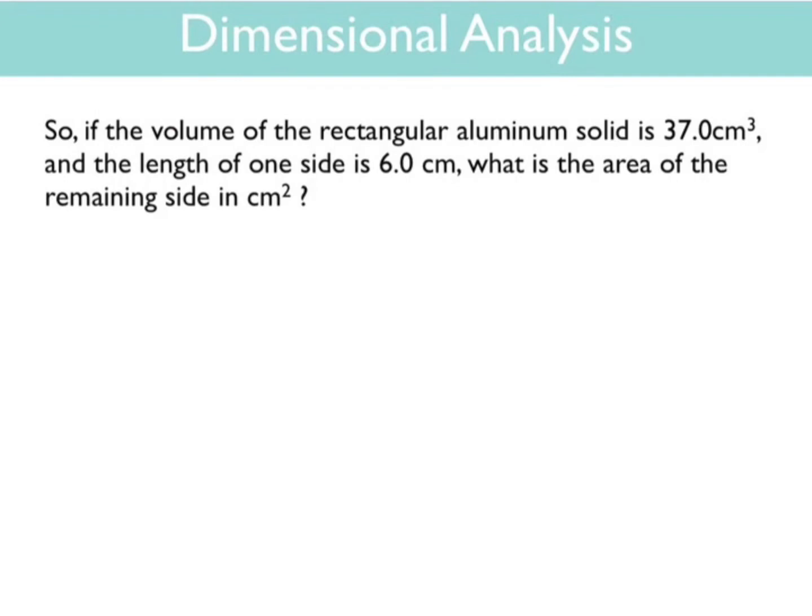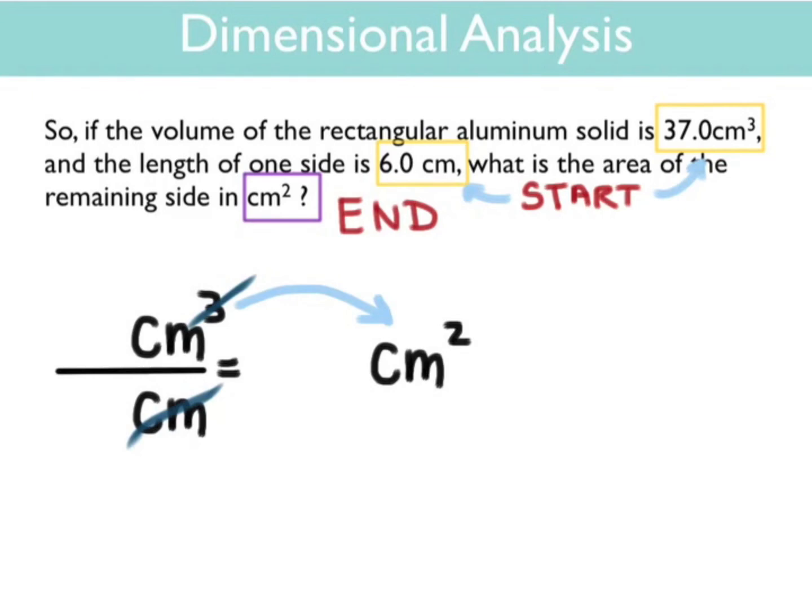Let's take this one a little bit further. If the volume of the rectangular solid is 37 centimeters cubed and the length of one side is 6 centimeters, what is the area of the remaining side in centimeters squared? In this case, we're given two starting numbers, centimeters cubed and centimeters. We're trying to find the area in centimeters squared. So let's just take a look at our units to see if there's a way to solve for centimeters squared using them. If you take centimeters cubed divided by centimeters, you indeed get centimeters squared. Let's try that. Divide 37 by 6 and we get 6.17 centimeters squared, the area of the remaining side.